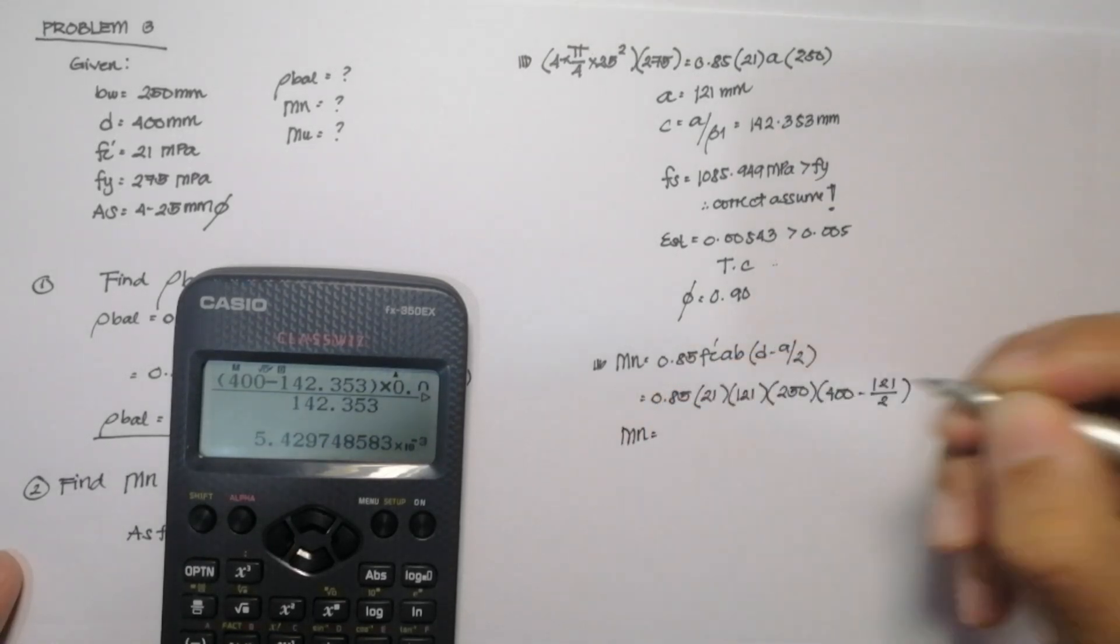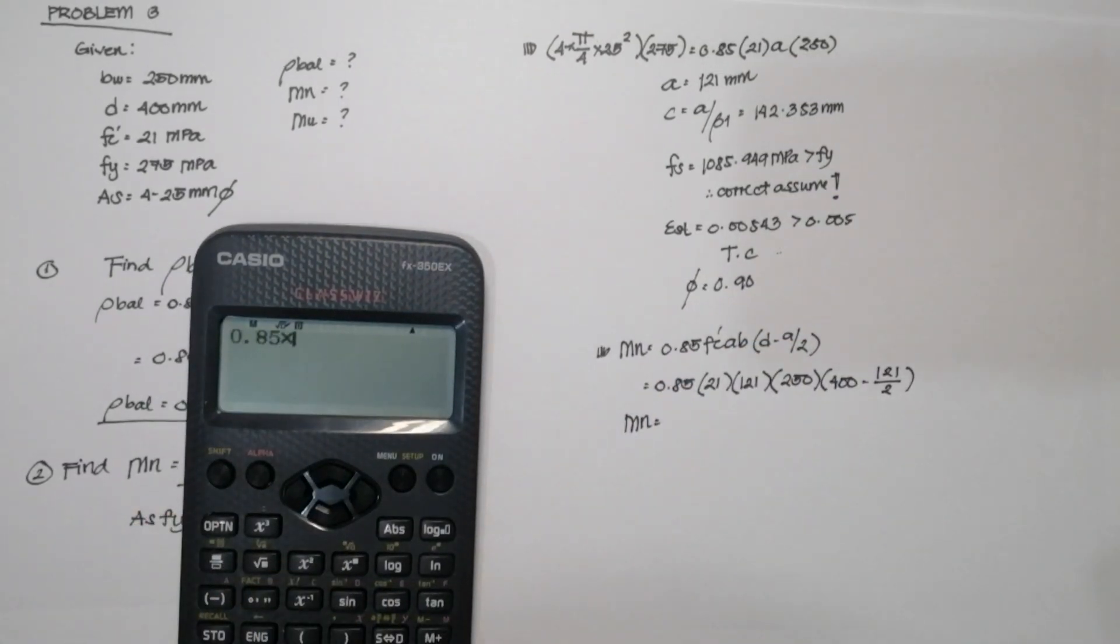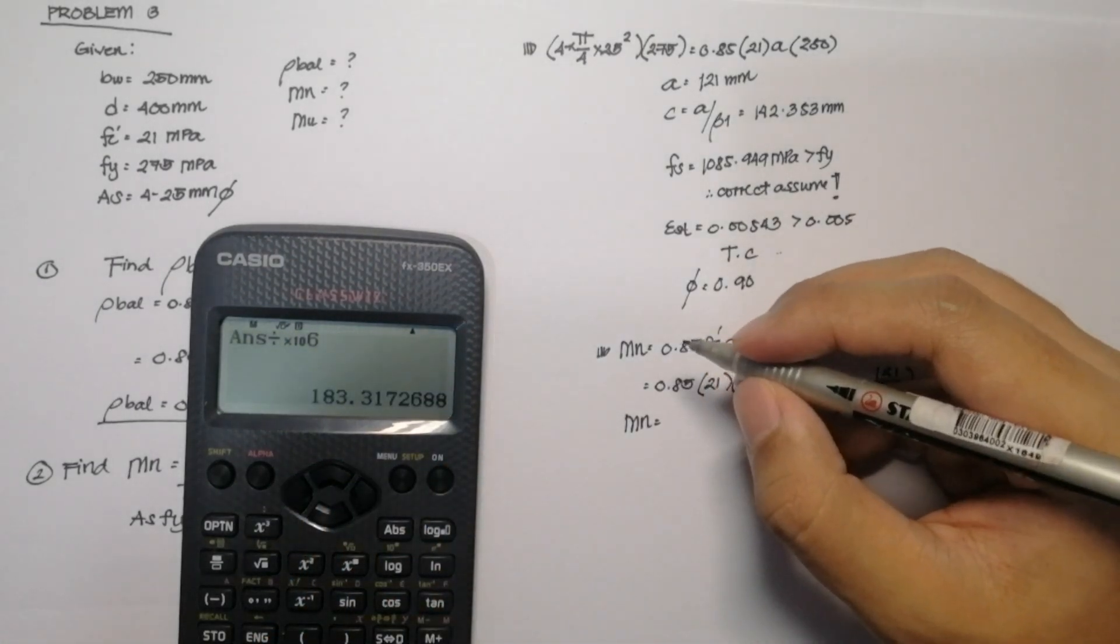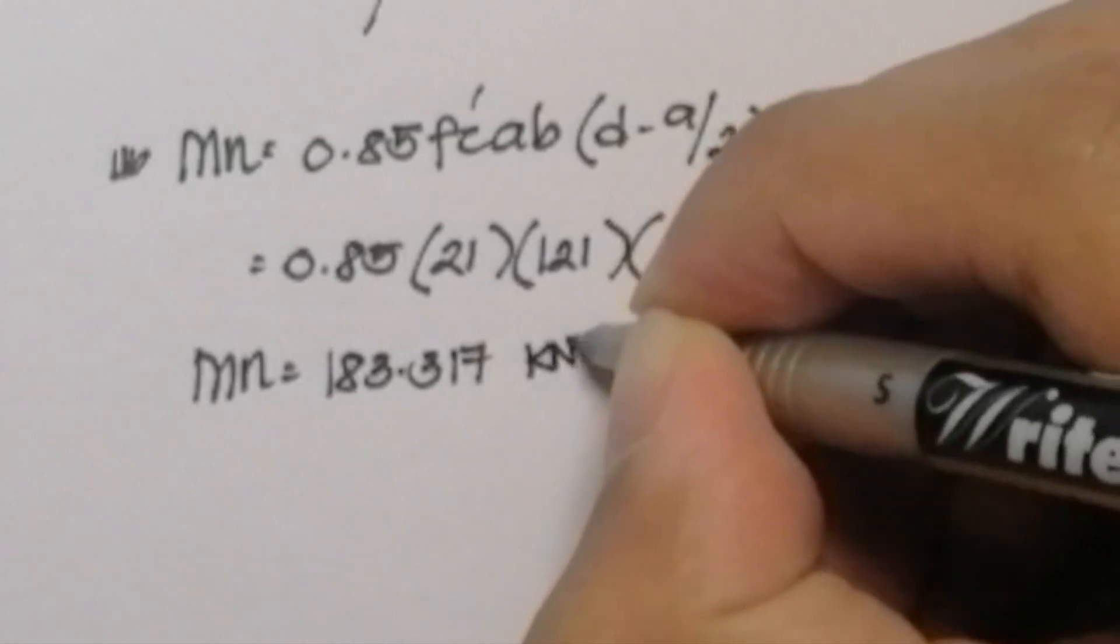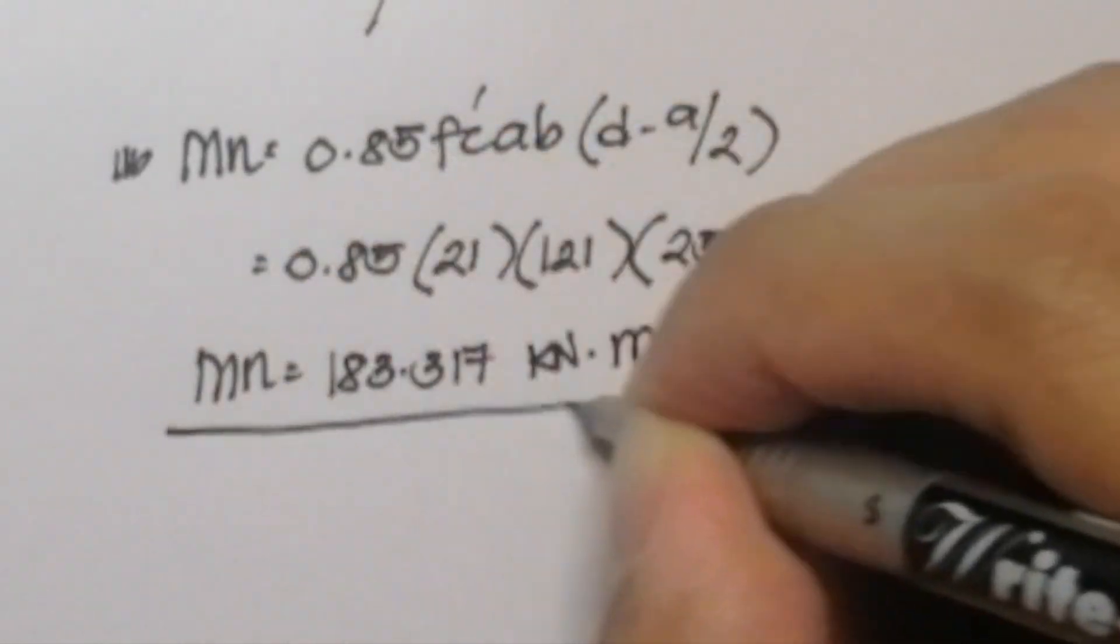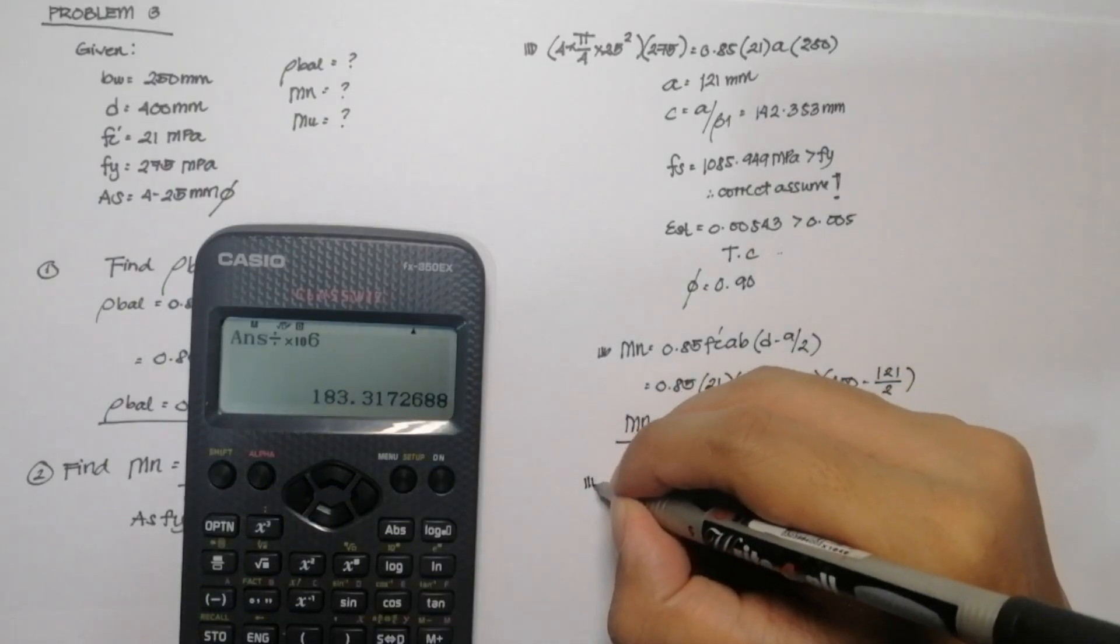So we can get a value for our nominal moment capacity of the beam. It is equal to 183.317. So don't forget to divide the value by 10 raised to 6 since we need to convert it to kilonewton meter. And that will be our answer for the second question.